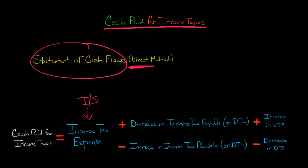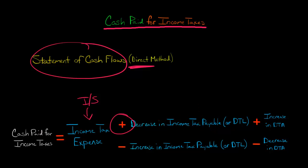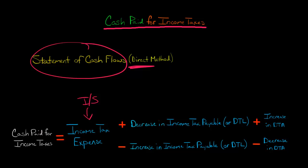Then you have to look and see if there was a change in income tax payable over the prior period. You would go to the balance sheet from this period and then look at the balance sheet from the last period and compare the two. If the income tax payable decreased over the prior period, then you would add that to income tax expense when you're getting cash paid for income taxes.